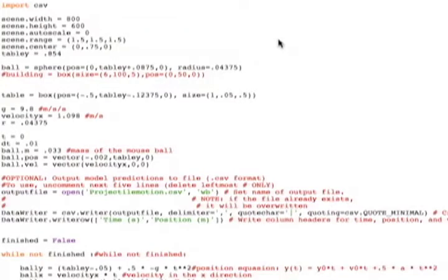To build a computational model with VPython, I set some initial conditions. I created a variable called table_y, which was the height of the table, and that was 0.854 meters. I set gravity at 9.8. I measured the ball radius and entered that, and I added a very small time step.